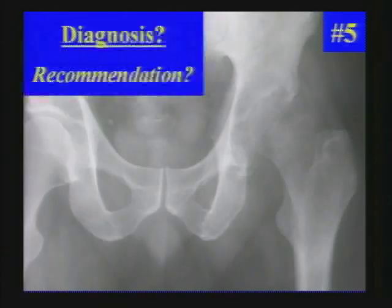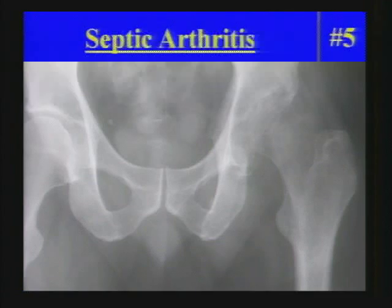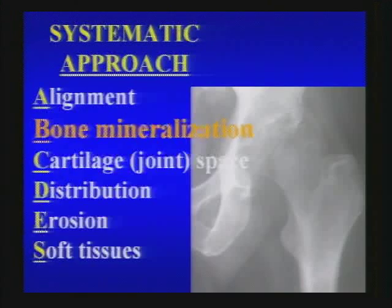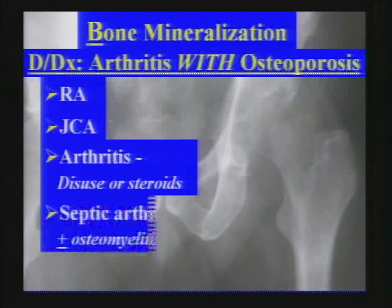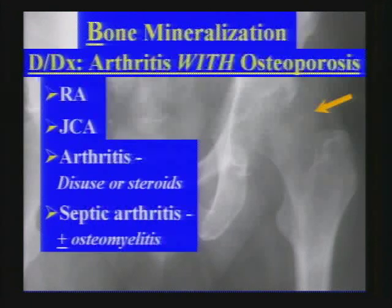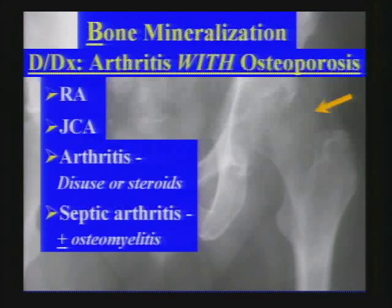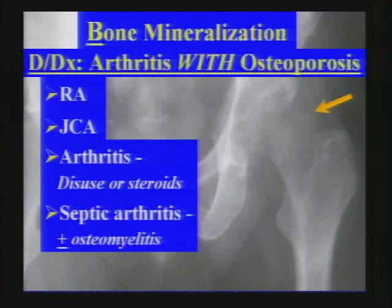Next case — septic arthritis. Regarding bone mineralization in our systematic approach: the differential for arthritis with osteopenic mineralization is quite long — not just inflammatory arthropathies, but really any longstanding arthritis with disuse or corticosteroid treatment. But if you have a monoarthritis that is rapidly progressive and symptomatic, you need to consider septic arthritis, which may be complicated by osteomyelitis.